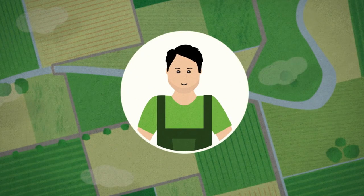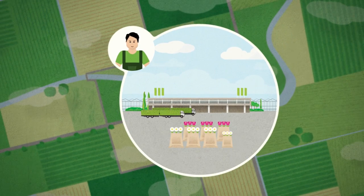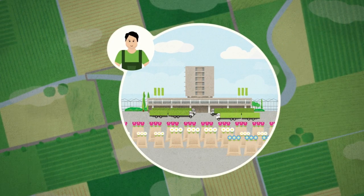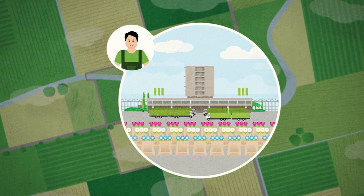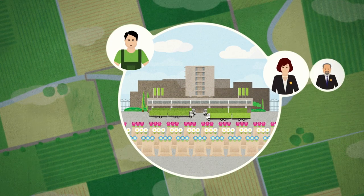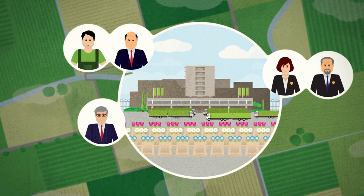This is John. John is a rose grower and a member of the cooperative. His cooperative has grown and changed over the years, which is why its organizational structure is sometimes difficult to understand.